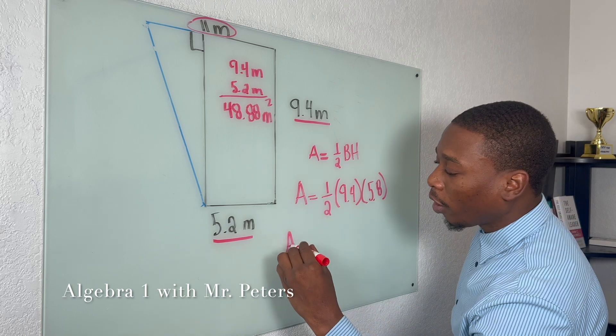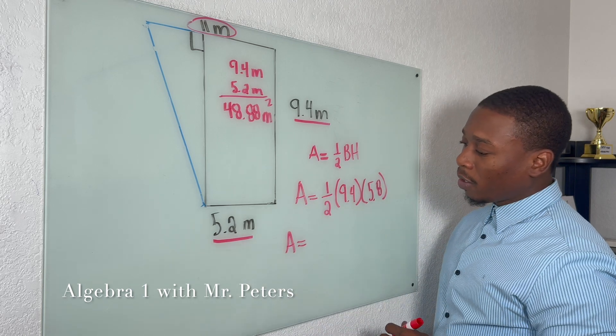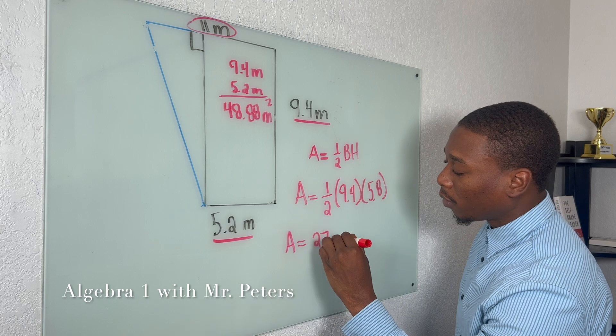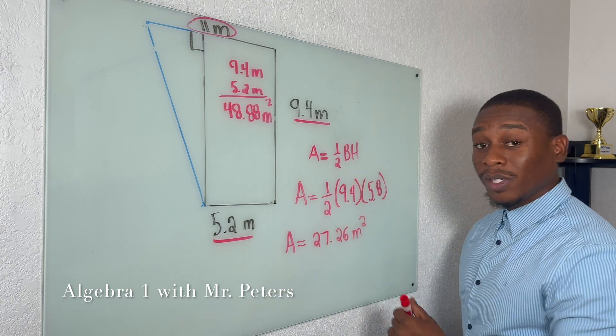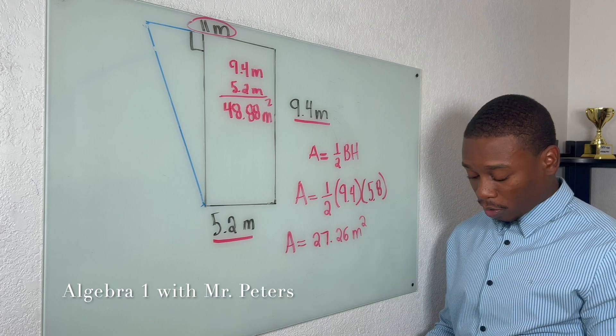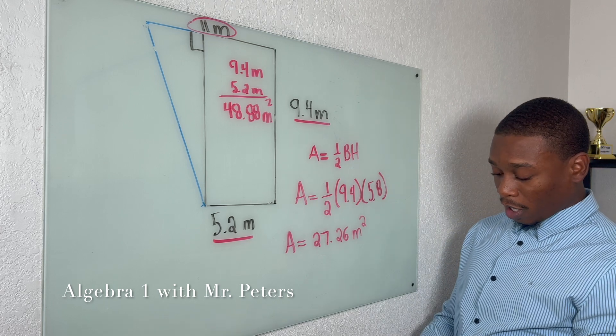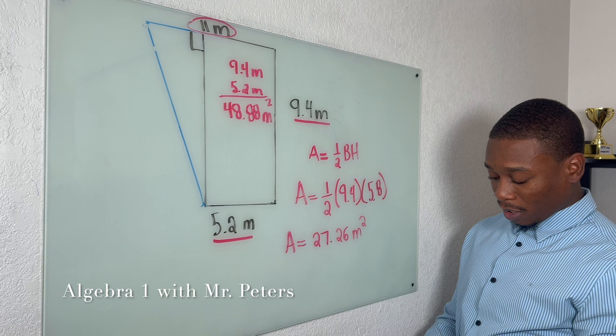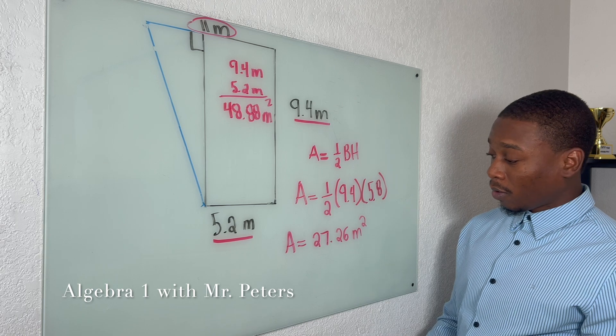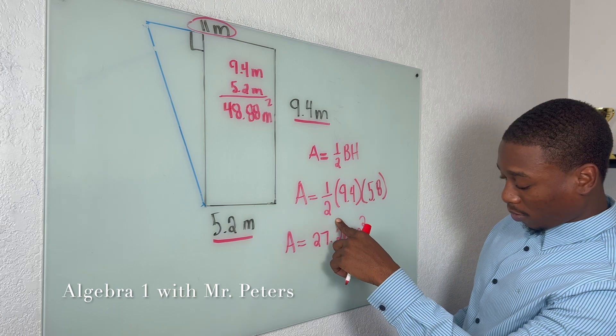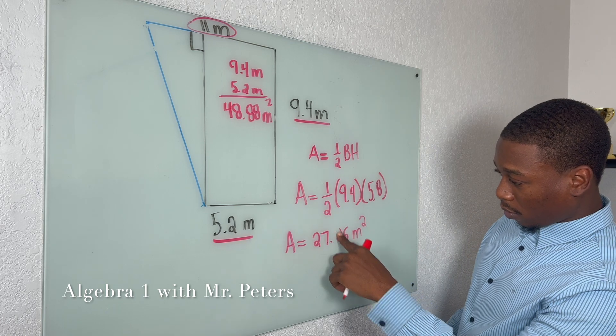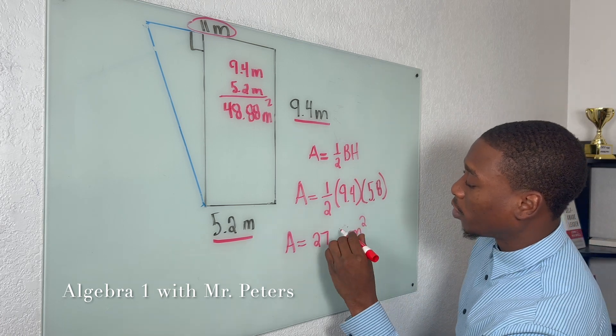Now the area after we multiply is going to be 27.26 meters squared. So this is the area now for the triangle, and we're just going to double check real quick. 9.5 times 5.8 times 5.2. So 27.55 for some reason. All right, so 27.55, I was off a little bit.